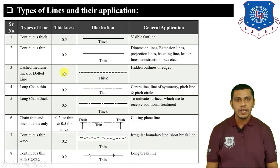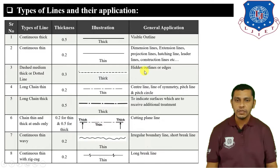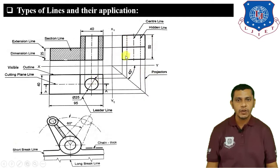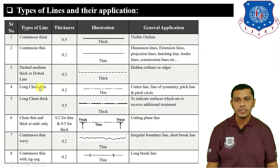Next is the dash or medium thick (dotted) line. It is 0.3 mm in thickness; we use a 2H pencil, darker in shade. This is a short-dashed medium line used to show hidden outlines or hidden edges of the object. In the figure, the dotted/dashed line shows the hidden part of the circle — the circle is not visible in this view, so to show its hidden part we use the hidden line.